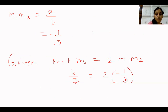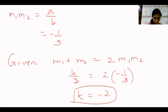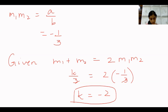Applying the condition M1 plus M2 equals 2·M1·M2: k upon 3 equals 2 times minus 1 upon 3, so k upon 3 equals minus 2 upon 3. Therefore k equals minus 2. Question 4 is straightforward — you just follow this procedure. Question 4 has 3 parts and in exactly the same manner you find the value of k.